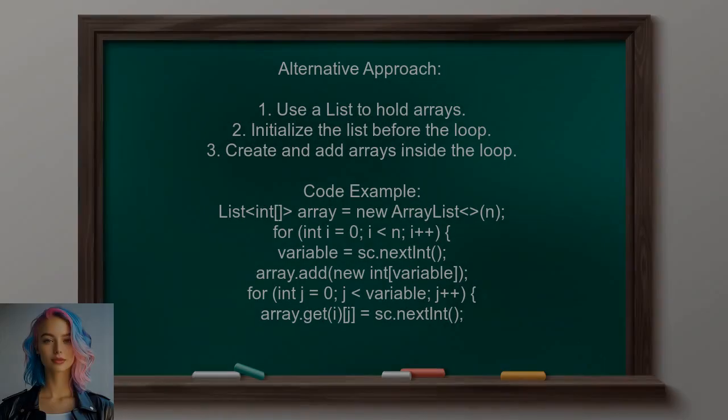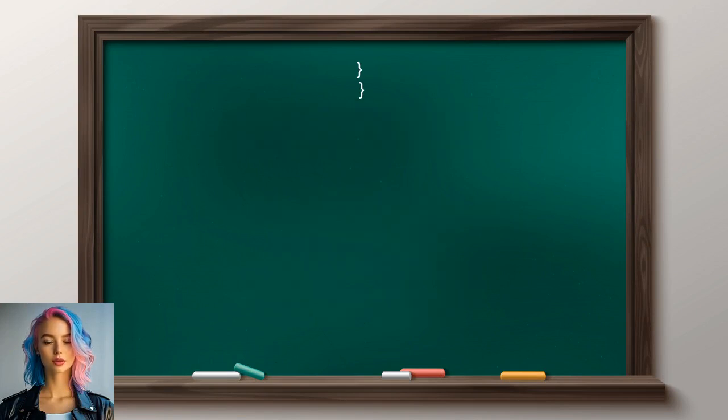An alternative approach suggested by another user involves using a list of arrays. In this method, you initialize the list outside the loop and then create and add arrays to the list during each iteration.